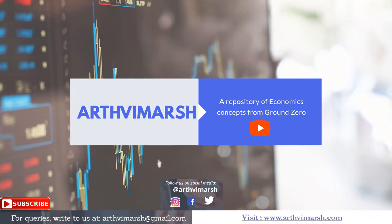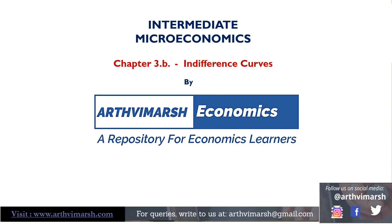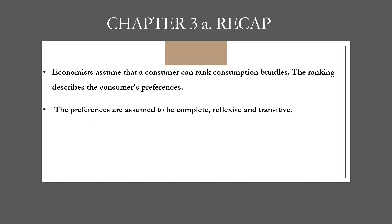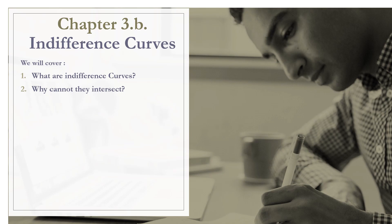Welcome back to Earth Vimarsh. So far we have been talking about preferences in the third chapter, and we have understood that there are underlying assumptions when we try to understand consumer preferences. The key assumptions discussed were completeness, reflexivity, and transitivity. Today we are moving to the notion of indifference curves, and in this video we are going to answer two key questions: what are indifference curves, and why cannot they intersect?